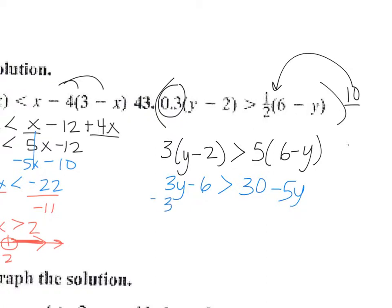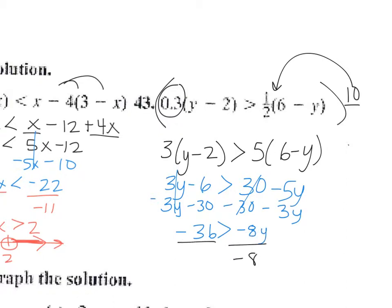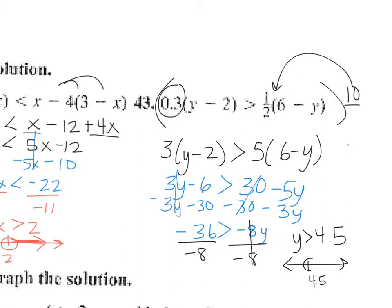Getting the y's together and then the constants, I'll have negative 36 less than negative 8y. Dividing both sides by negative 8 — and the direction changes because I divided by a negative — so y is greater than 4.5. I'm going to make an open dot at 4.5, shaded to the right.